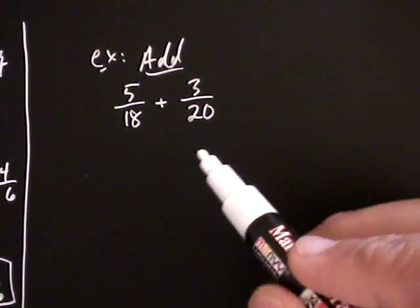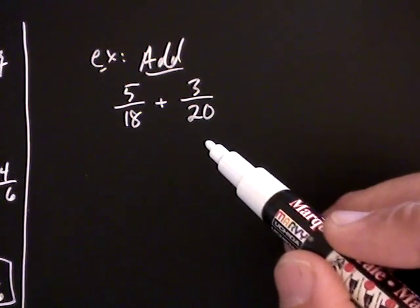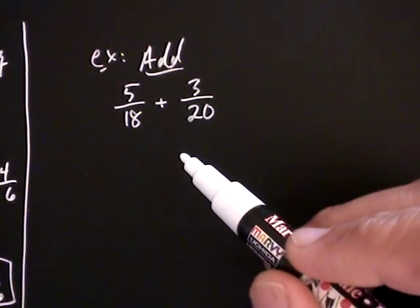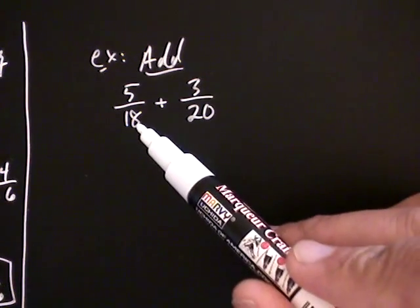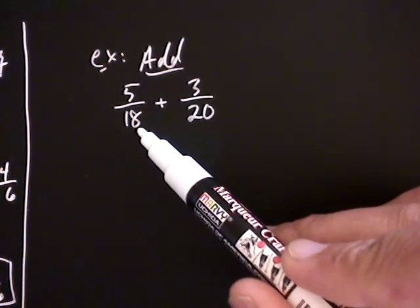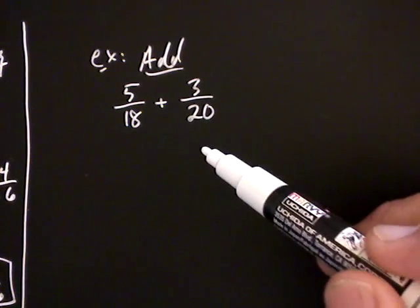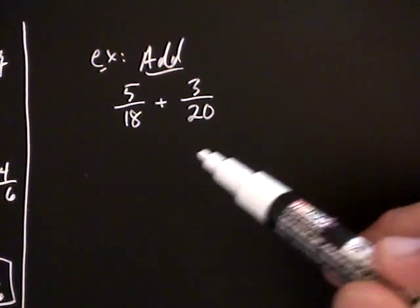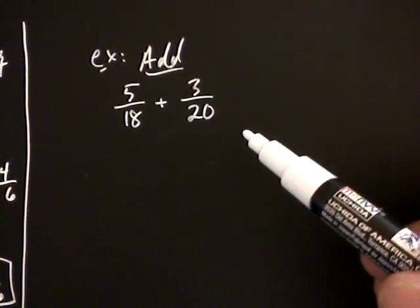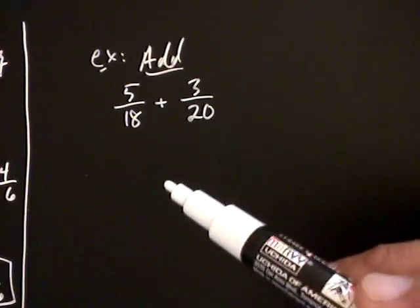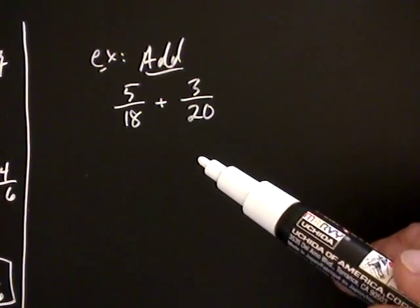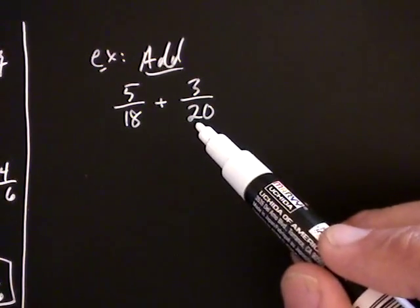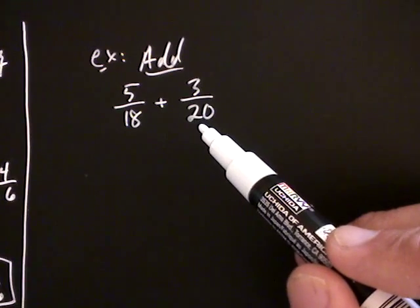These fractions have pretty large denominators. It's impractical for us to take a pizza and divide it into eighteen pieces, and a second pizza and divide it into twenty pieces, and then subdivide those pizzas to get a common denominator, like we did earlier. So, the question is, how can you find a common denominator so you can add these two fractions together?